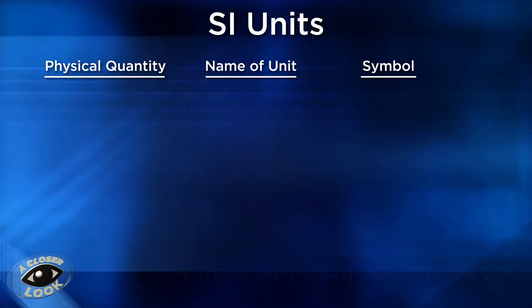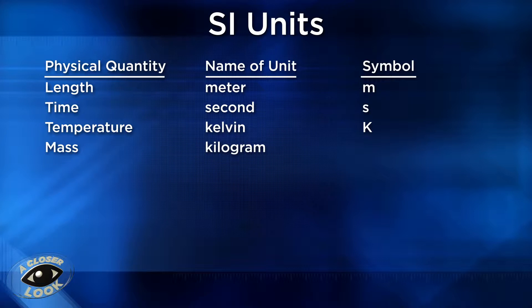Now let's look at some SI units. The base unit for length is the meter, represented by the letter M. Time's base unit is the second, represented with an S. Temperature's base unit is the Kelvin, represented by a capital K. The base unit of mass is the kilogram, represented as kg.